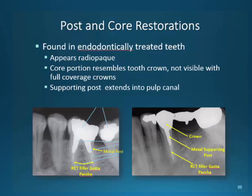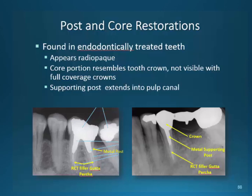Post and core restorations are used when endodontically treated teeth require treatment. The nerve of the tooth has died and endodontically the nerve is removed and filled with a clay type of restoration. These long extensions coming from the filling are called metal posts — they give support to a tooth that has lost a lot of its coronal structure. Filling the root nerve and pulp chamber is what we call gutta-percha — a fill material laced with a clay-like material slid down into the opening of these canals from the crown of the tooth, giving stability to the root of the tooth. In this slide, I am noting the coronal part of the tooth, the metal supporting post, and the root canal filled with gutta-percha.